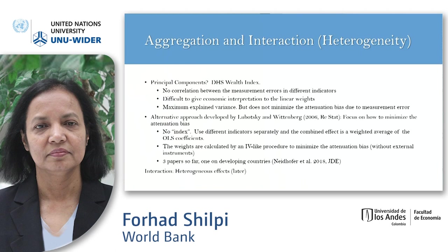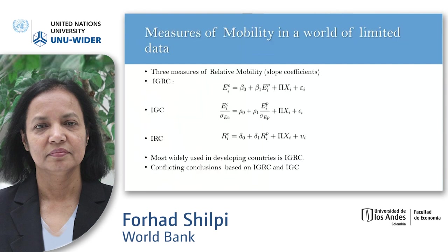There is also the other approach that Lubotsky and Wittenberg had suggested, and there are a couple of papers on that — you can look at the details in the chapter. So next I'm coming to the measurement of it. There are three or four different standard measurements used in the economics literature. The very first one is that you regress children's education on parents' education, and the slope coefficient gives you what is known as relative persistence or relative immobility. You can also standardize both children's and parents' education and run the same regression.